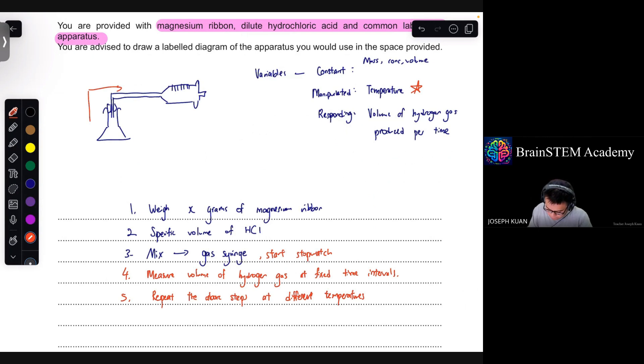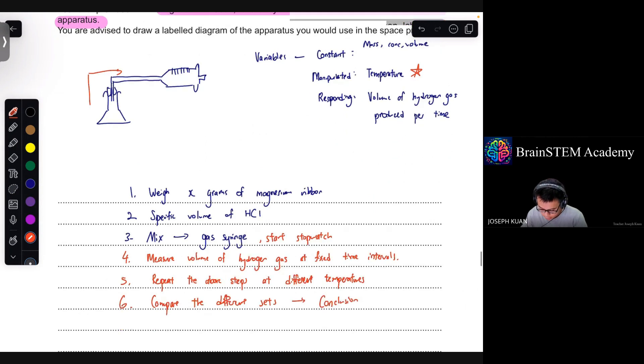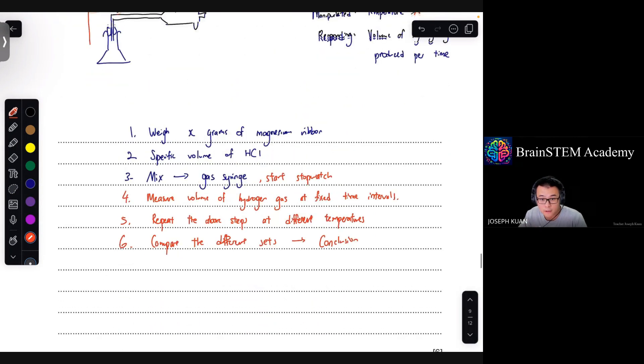So with that said, essentially the next mark is just compare. You compare the different sets. And essentially you can form a conclusion out of your observation, your recorded results. So that's pretty much it. Let me see if I missed anything. Essentially, this question is six marks, so you need to have six points.